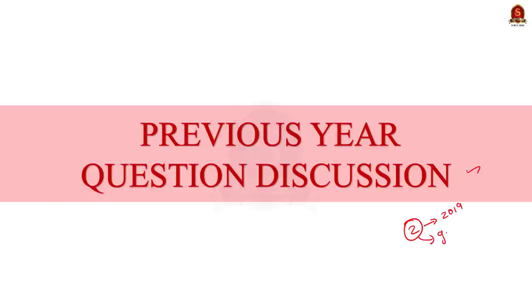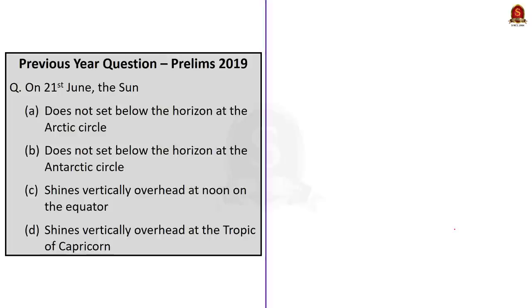Both these questions are from geography. Let us take up the first question. On 21st June — this is the question — four statements are given and we have to find the correct statements. Statement A says the sun does not set below the horizon at the Arctic Circle. Statement B: does not set below the horizon at the Antarctic Circle. Statement C: shines vertically overhead at noon on the equator. Statement D: shines vertically overhead at the Tropic of Capricorn.